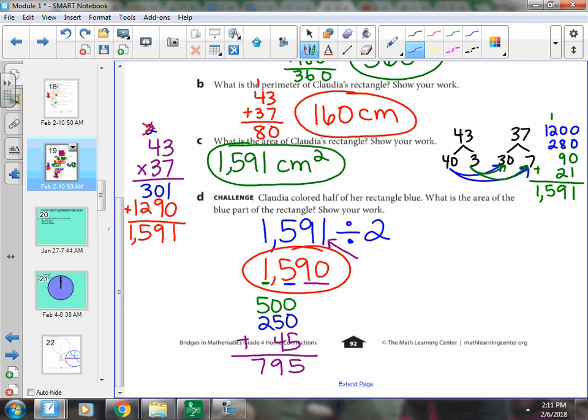So instead of 795, the answer should be 795 and a half. And because we're talking area, write it like that. Okay?